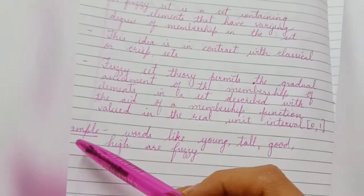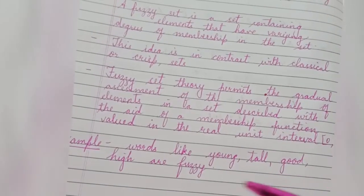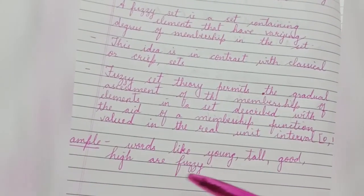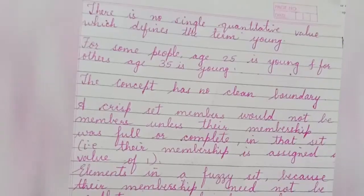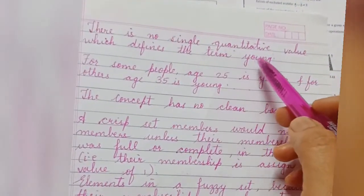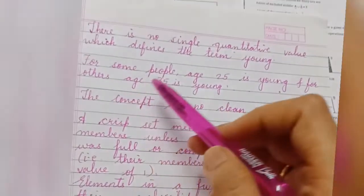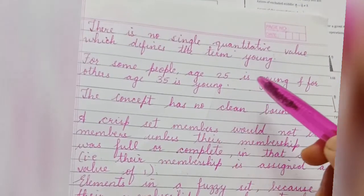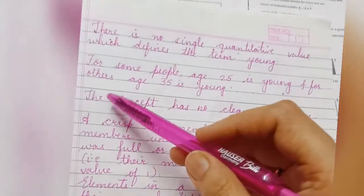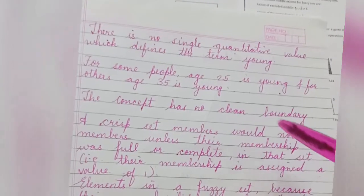For example, words like young, tall, good, high are all fuzzy. There is no single quantitative value which defines the term young. For some people age 25 is young, and for others age 35 is young. The concept has no clean boundary.